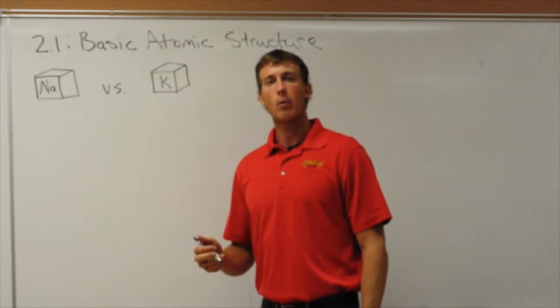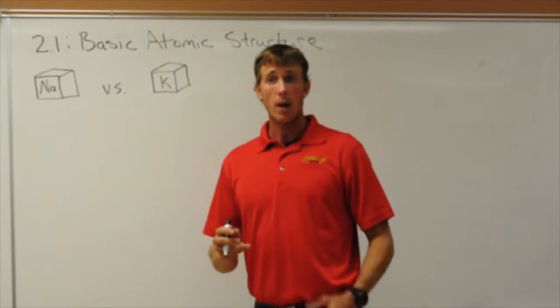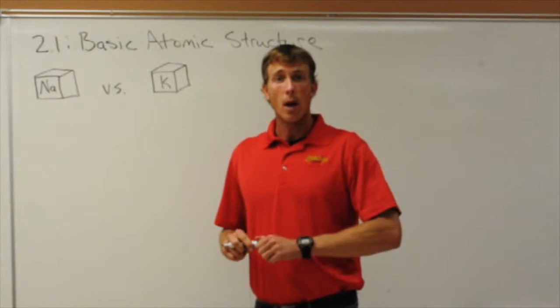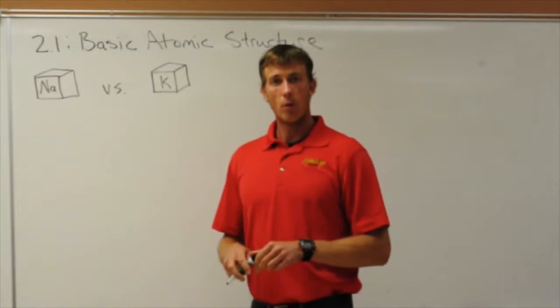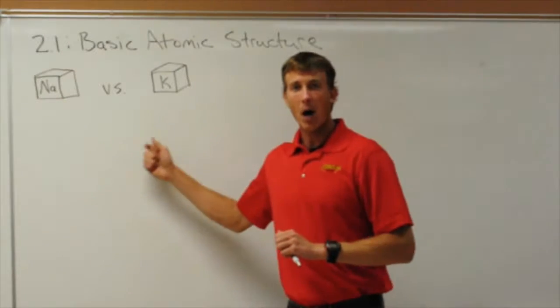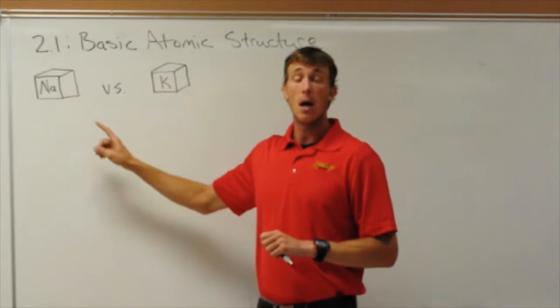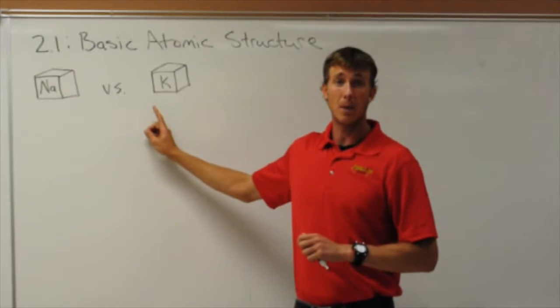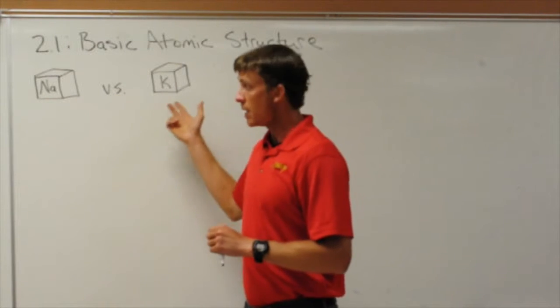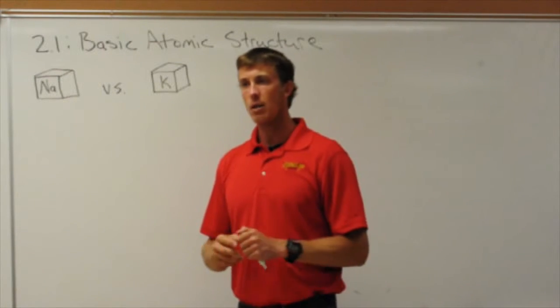Alright, so now what we're going to be looking at for the first part of unit 2 is kind of going back to what we did in unit 1.3. We talked about density. So we have something like a block of sodium, maybe, and a block of potassium. Remember the element symbol for sodium is Na, and the element symbol for potassium is K. If you take these two, we see that potassium is more dense than sodium. And the whole idea is why.